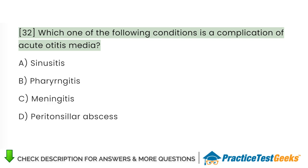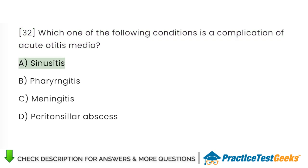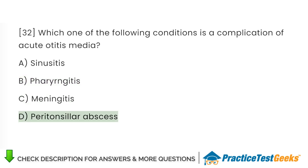Which one of the following conditions is a complication of acute otitis media? A. Sinusitis. B. Pharyngitis. C. Meningitis. D. Peritonsillar abscess.